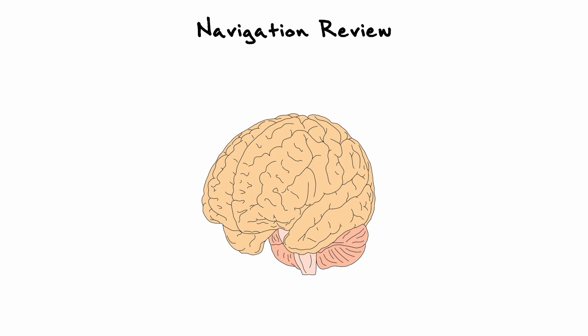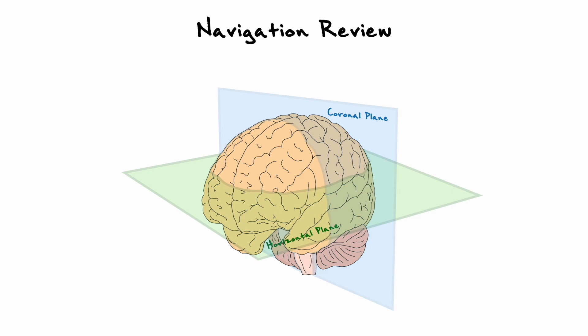To get started on the anatomy, I first want to review the neuroanatomical navigation terminology we established in the very first sections of our discussion, because a lot of the upcoming terminology is based on these terms. Given that the brain is a 3D structure, we can analyze it by decomposing it into 2-dimensional planes that each take different cross sections of the brain into consideration. The first plane is the horizontal plane, which divides the brain into a top and bottom half. The second is the coronal plane, which divides the brain into a front and back half. Finally, the sagittal plane divides the brain into a left and right half.